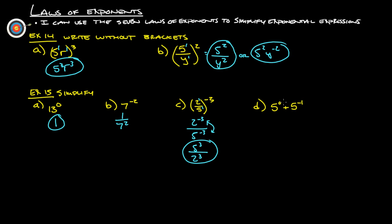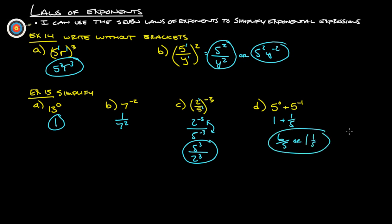And this here: 5 to the 0 — anything to the 0 power is 1 — plus 5 to the negative 1st is 1 over 5 to the positive 1st. So 1 plus 1 fifth is going to be 6 fifths, or 1 and a fifth. Either one is fine.